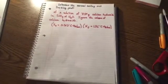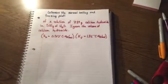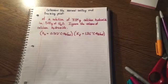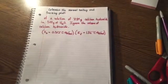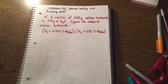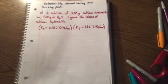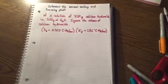Okay. Determine the normal boiling and freezing point of a solution of 7.89 grams of calcium hydroxide in 500 grams of water. Ignore the volume of calcium hydroxide.